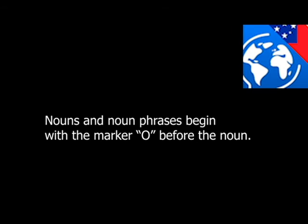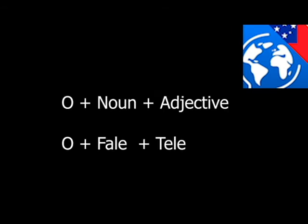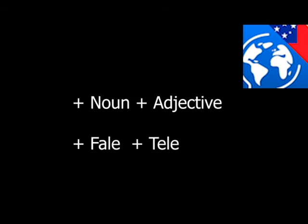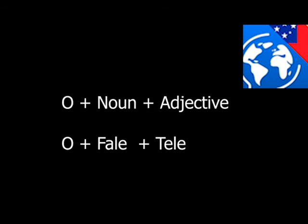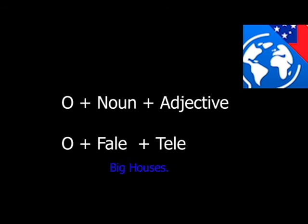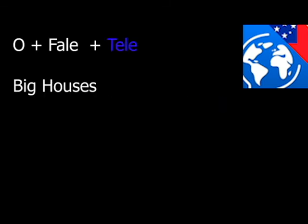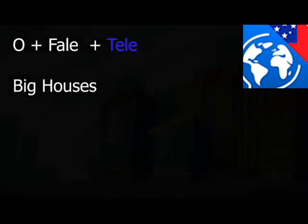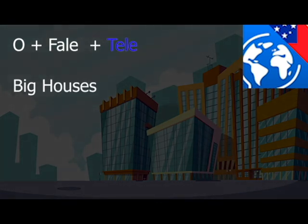Building from that, if you have a word that describes a noun — an adjective — remember the structure from earlier: noun plus adjective. For example, 'fale tele.' Simply put the O in front of the noun and now you have 'o fale tele.' O fale tele means big houses or big buildings — it's plural, referring to multiple houses.